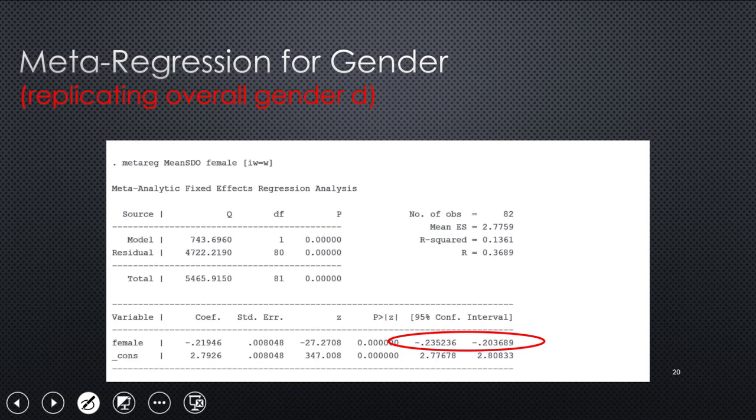So here's an actual output. And again, ignore the details for now. But basically, we're regressing the dependent variable, the mean SDO score on an independent variable. This is female. And we're weighting it. The W factor is the one that we defined earlier. So this one replicates what we've found overall is that there's a significant effect for gender that females are lower on SDO. The confidence interval doesn't include zero. So you've got this negative comparison of males.